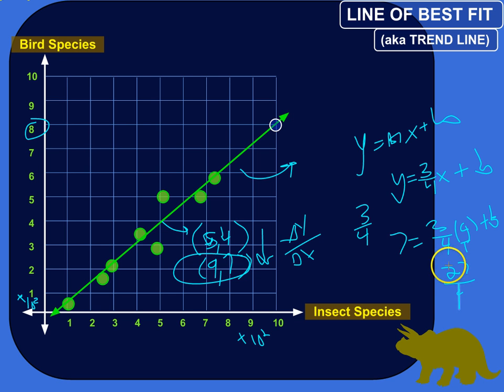Which would be 6 and 3 fourths. So 7 equals 6 and 3 fourths plus b.